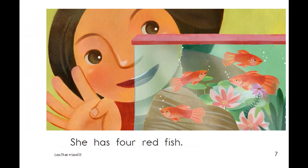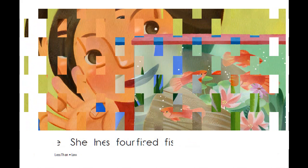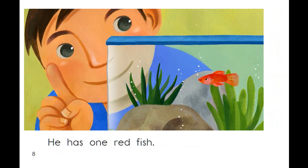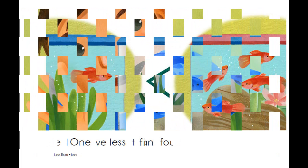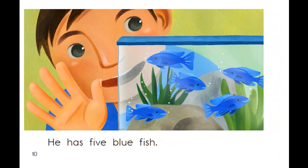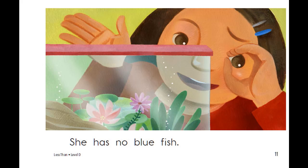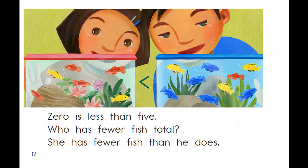She has four red fish. He has one red fish. One is less than four. He has five blue fish. She has no blue fish. Zero is less than five. Who has fewer fish total? She has fewer fish than he does.